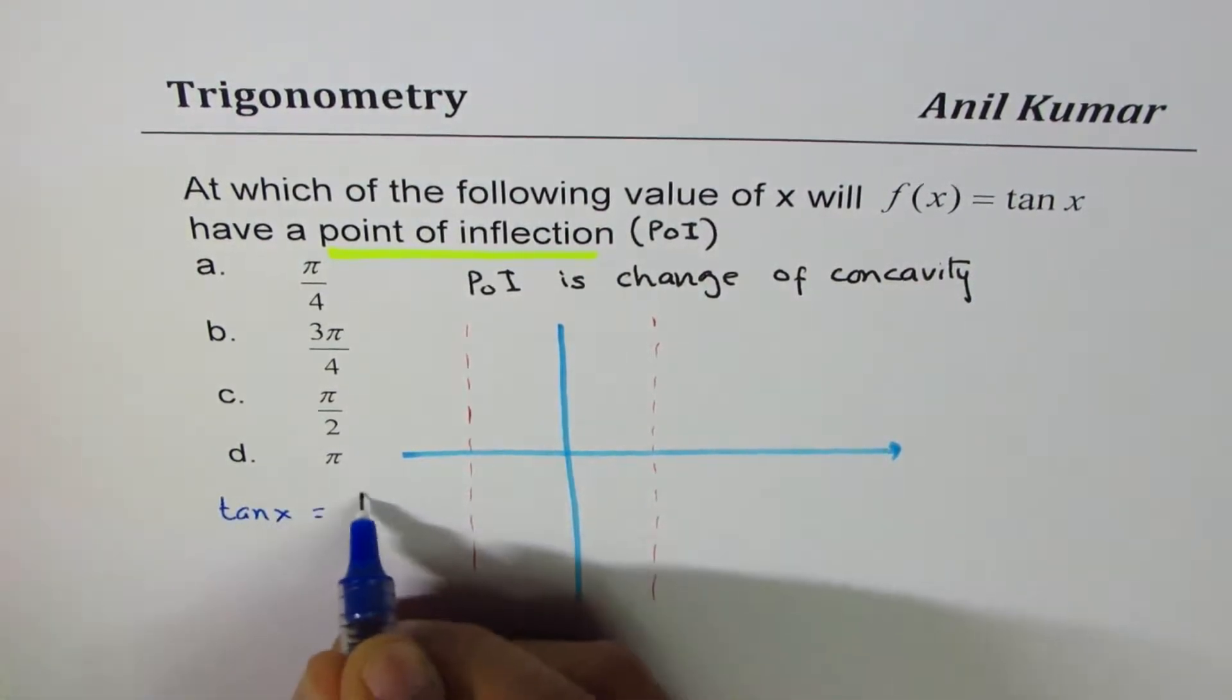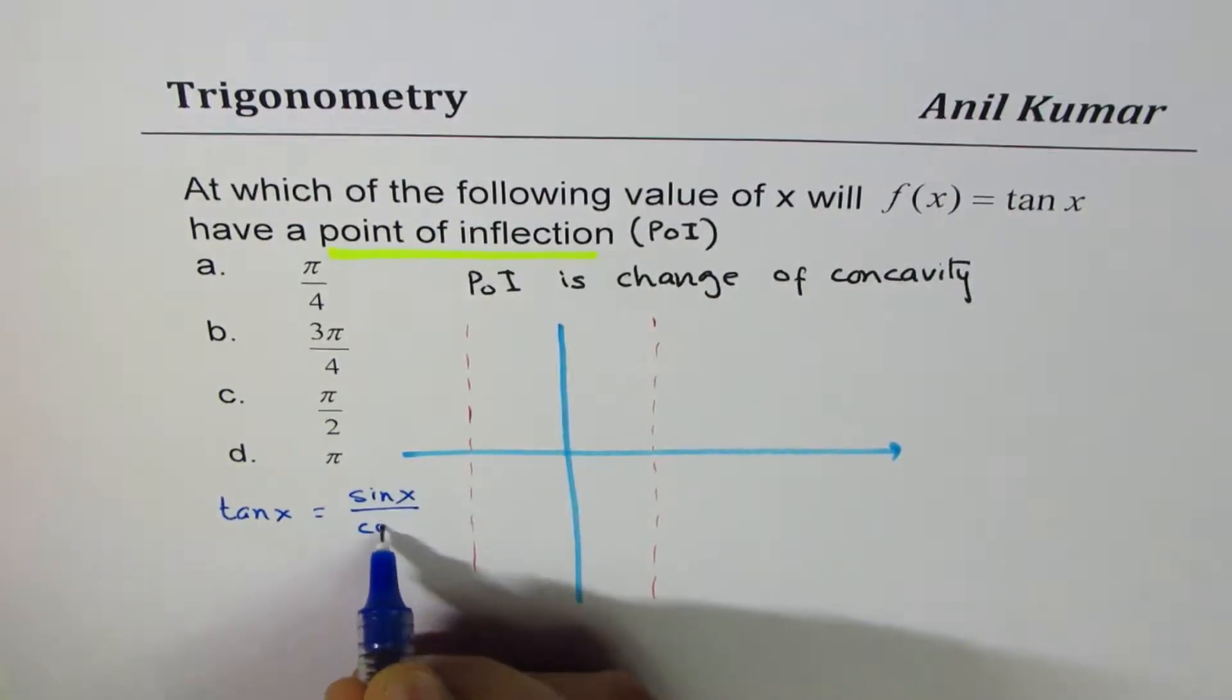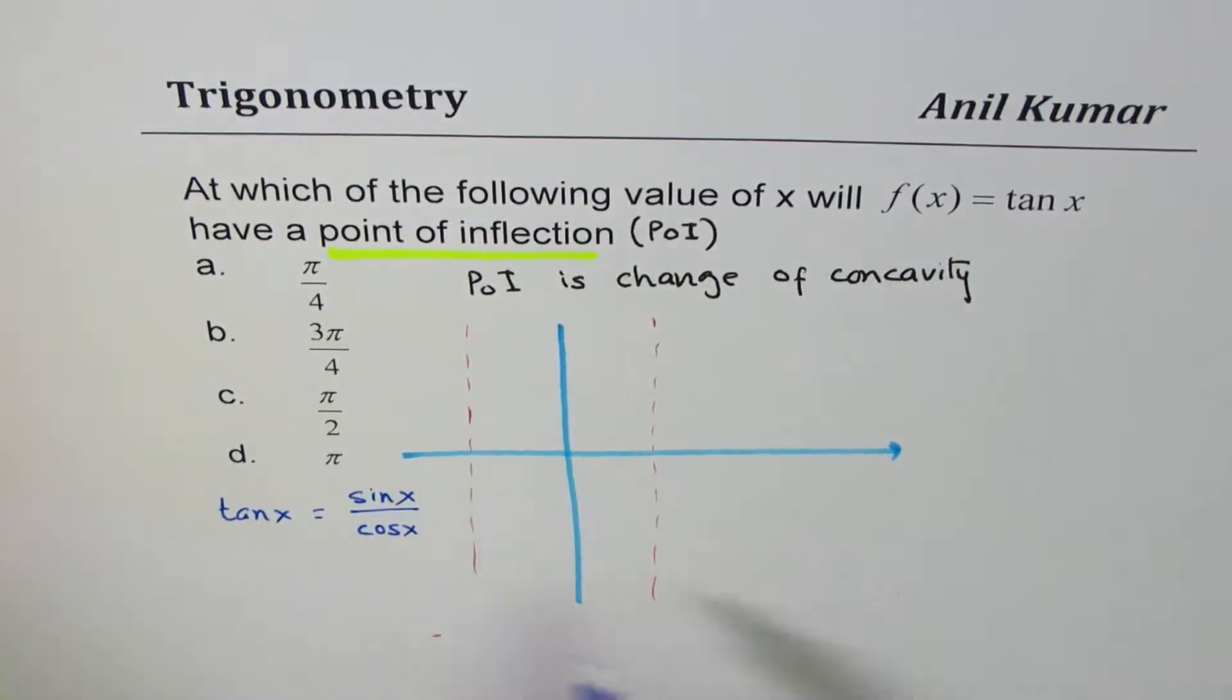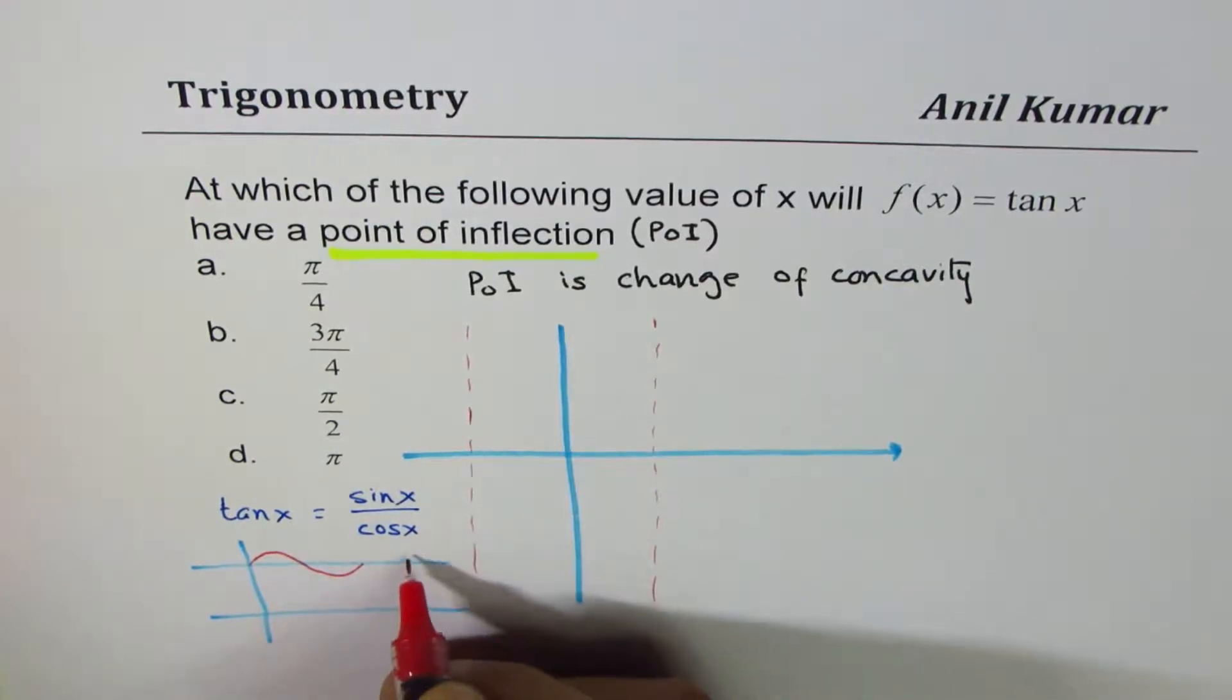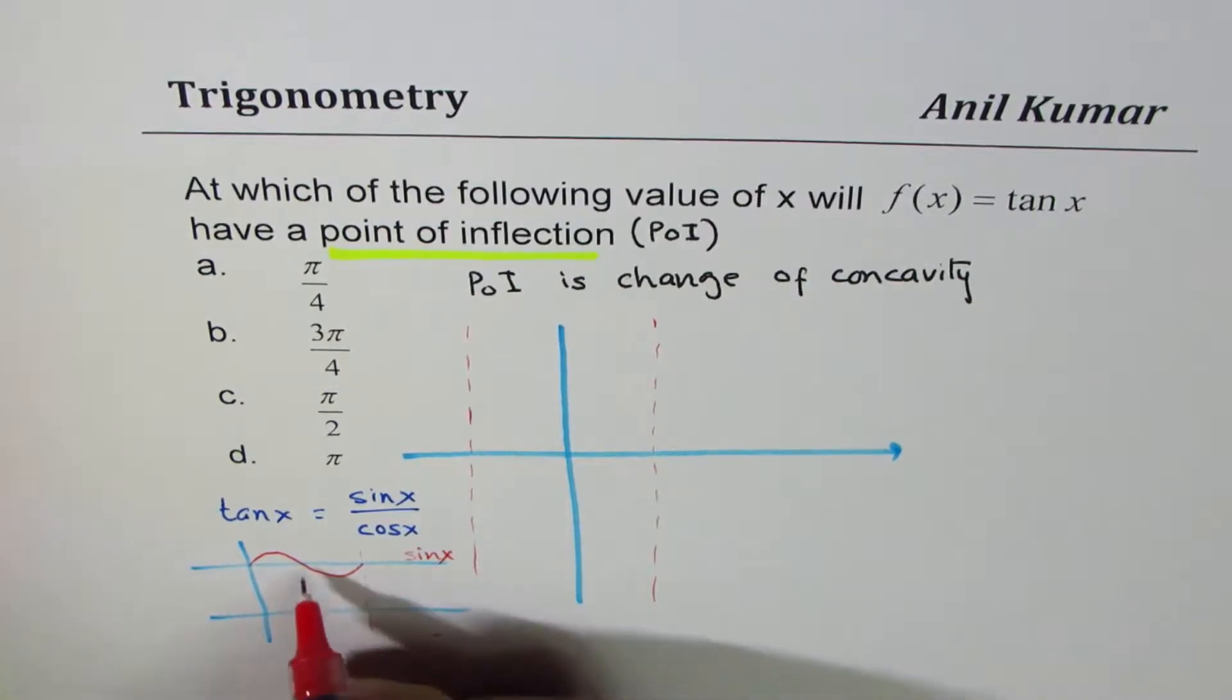tan x is sin x over cos x. Now sin x over cos x, let's sketch these two functions also. So sin x is kind of like this - this is sine. And cos x, if you use this as your parameters, cos x will be kind of like this.